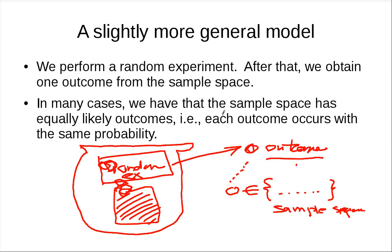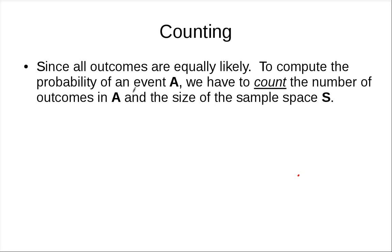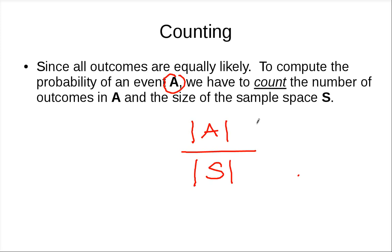In the model we are using, we assume that in this sample space, all outcomes are equally likely — each outcome occurs with the same probability. Therefore, if you want to compute the probability of an event A, we need to figure out the size of set A and divide by the size of the sample space. The reason is that for each outcome, because they are equally likely, the probability of getting one specific outcome is one over the size of the sample space. We take the sum and we get this. We'll see a more rigorous treatment when we talk about probability axioms.